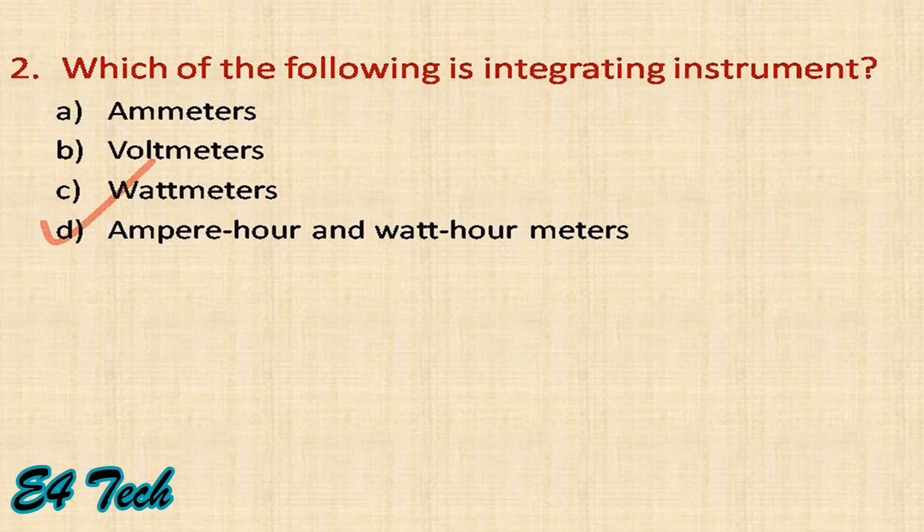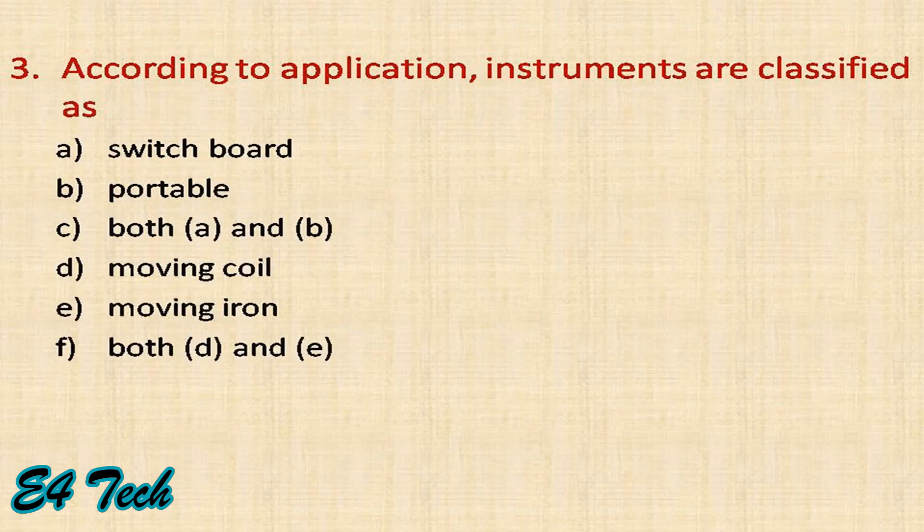According to the application, instruments are classified as: switchboard, portable, moving coil, moving iron, both A and B, or both C and D. Moving coil and moving iron are based on construction type, not application. Based on application — that is, the use — switchboard instruments are placed at a fixed position on a switchboard. Therefore the answer is both A and B: switchboard and portable type.